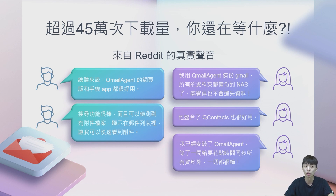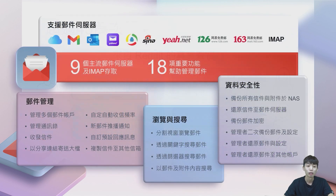除此之外，QMail Agent也整合了QSearch，可以提供非常好的搜寻能力。你不仅可以搜寻到邮件的内容，你也可以搜寻到附件的内容。QMail Agent提供了所有的功能，以及支援了九种主要的主流邮件伺服器，你可以直接透过登录邮件帐号密码来存取。